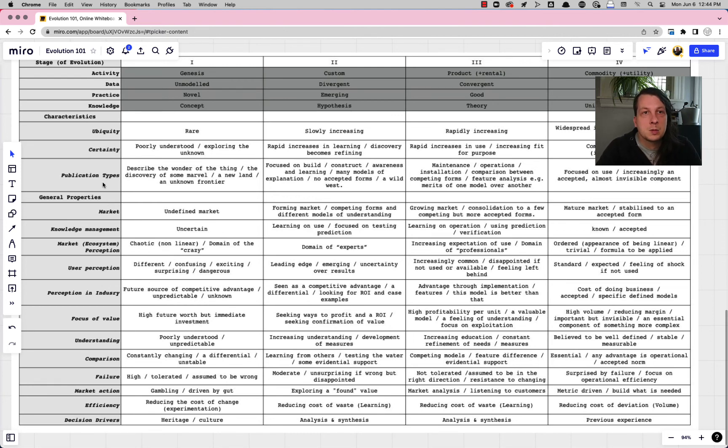Ubiquity, certainty, publication types, market properties, knowledge management, market, ecosystem perception, etc. User perception. All of this is interesting and fascinating and the stage implies all of them. And so when you're deciding where to place something you're reverse engineering the stage by thinking about the qualities first and then trying to fit them into the stage that makes the most sense.